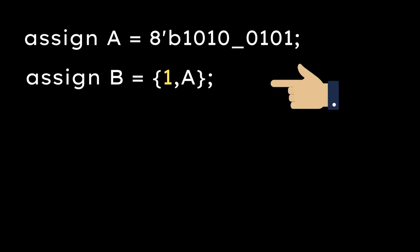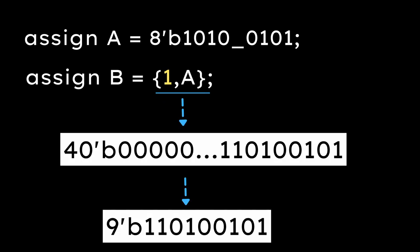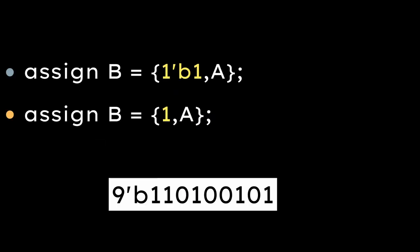Now, let's say B is a concatenation of 1 and A. Because 1 is 32 bit wide, the output will be of 40 bit which will be later truncated to 9 bits as B is 9 bits. Here, the results are same in both concatenations when we use 1'b1 and 1.